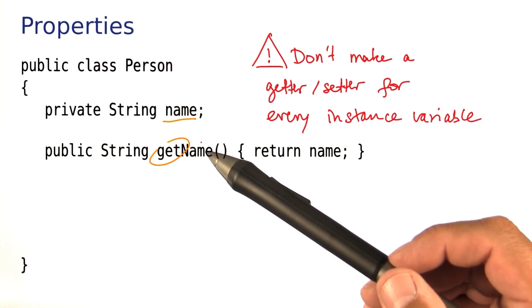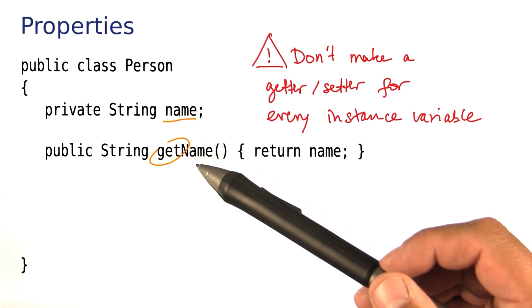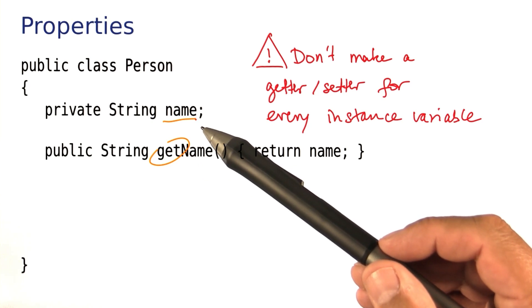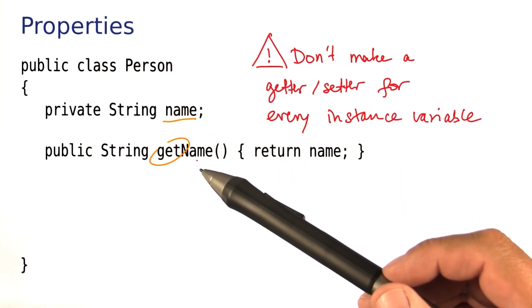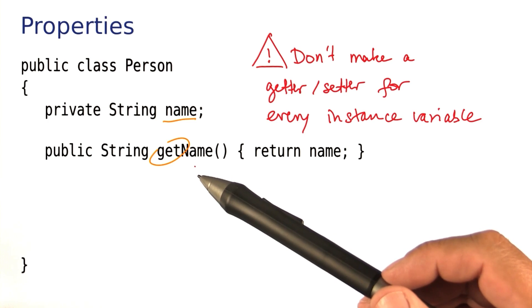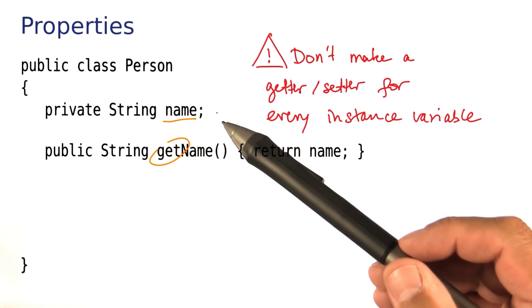Only use the getters when there is a need for the user of the class to read the instance variable, and only supply a setter when there is a need for the user to modify it. Many instance variables do not have getters and setters.